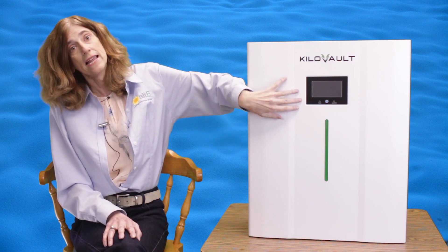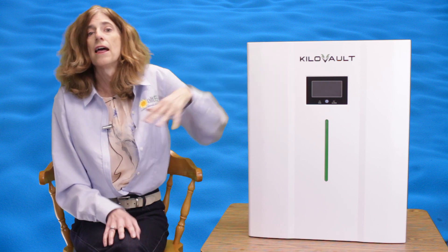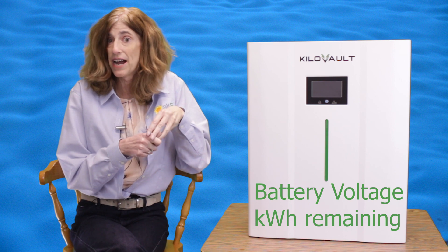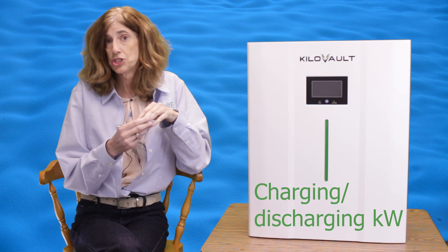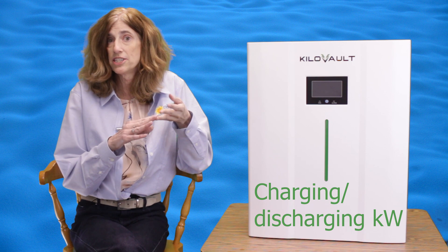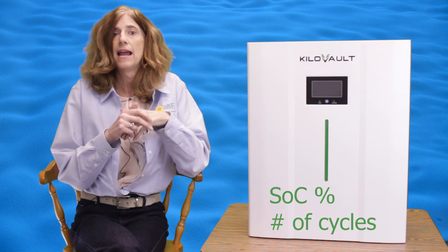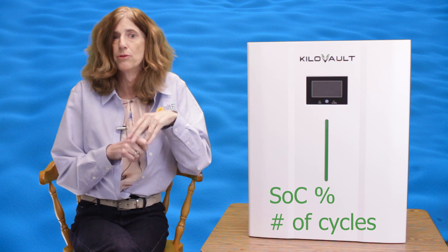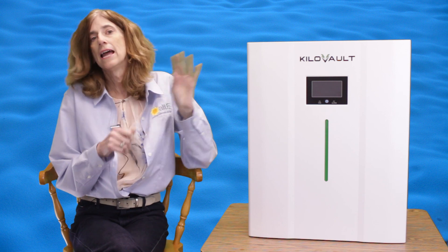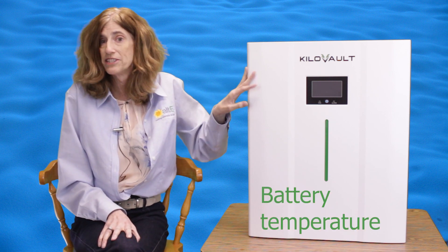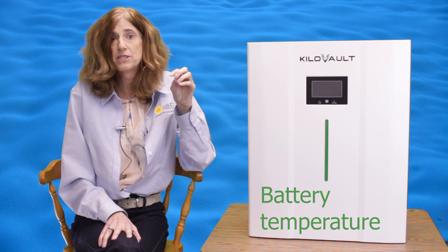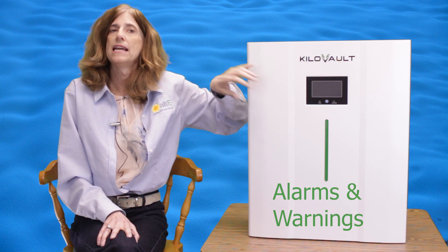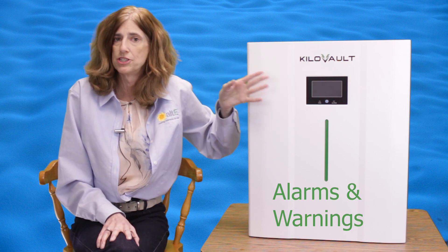Then it also has this LCD indicator that gives you the battery voltage, the remaining energy in kilowatt hours. It'll show you if it's charging or discharging and how many kilowatts it's either using or charging. It's going to show you the state of charge percentage and the number of cycles that it's been through so you can keep an eye on its life cycle. It'll show you the temperature of the battery so you'll know if it's getting close to any of those extremes. It'll also show you alarms and warnings so it really gives you a good indication of what's going on with the battery just from looking at it.